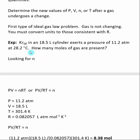So here's an example. I have a gas in a 18.5 liter cylinder. The pressure for the gas is 11.2 atm, and the temperature is 28.2 degrees C.